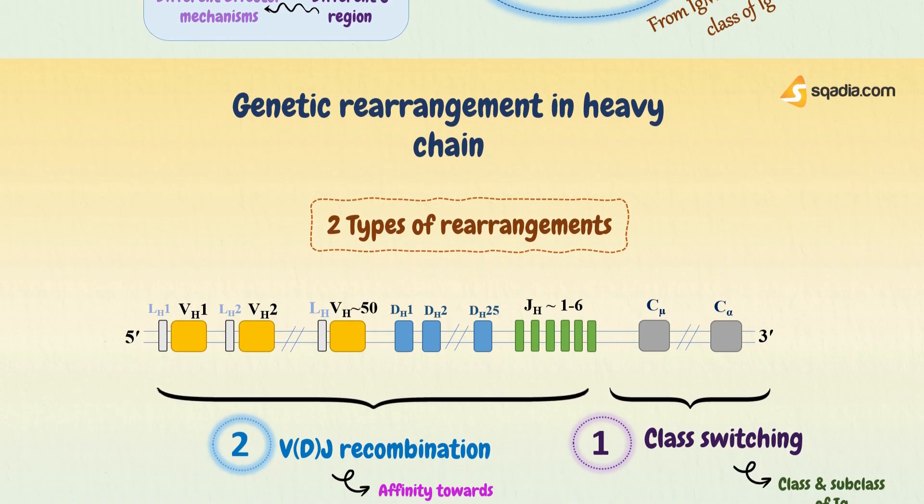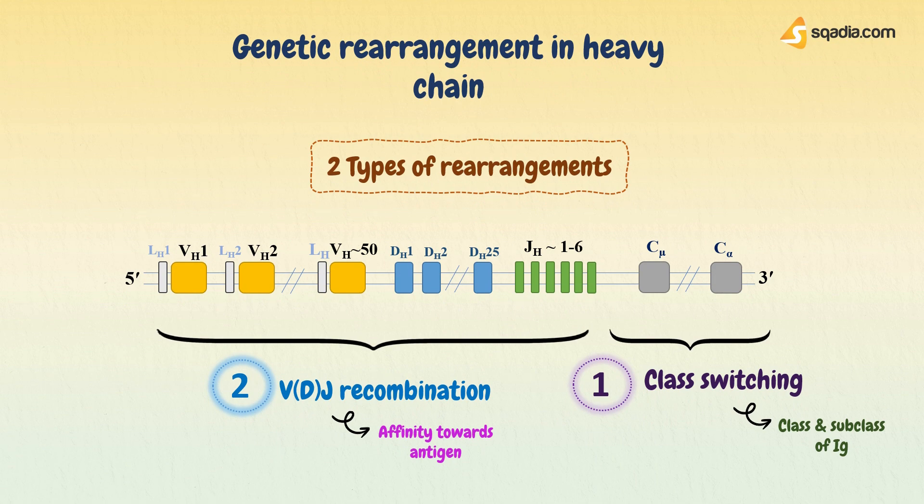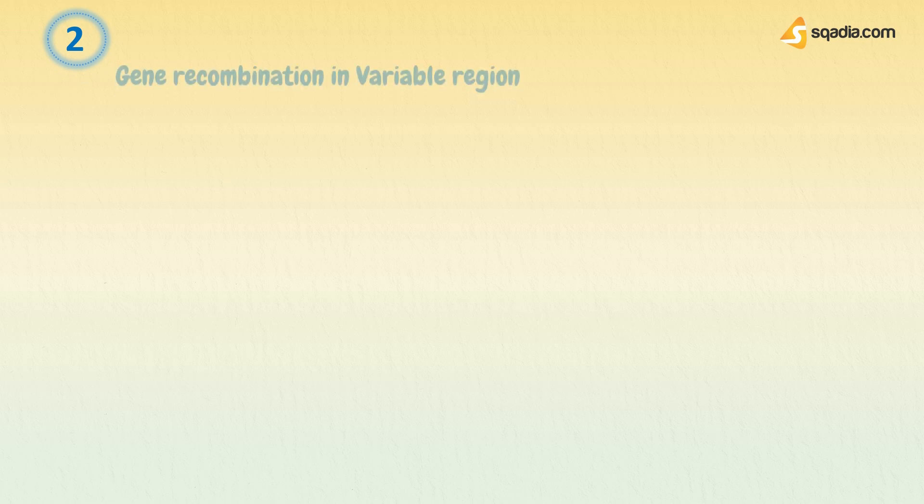So after learning about gene rearrangement in constant region or class switching, let's learn about gene recombination in variable regions, also known as VDJ recombination.